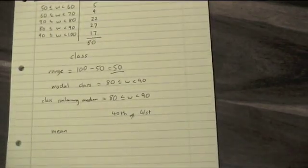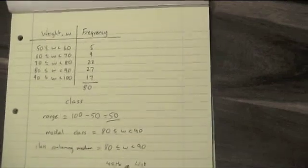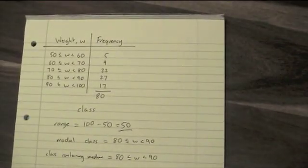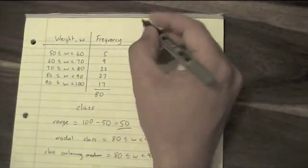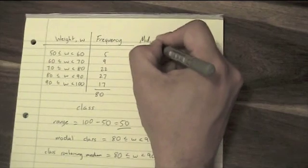The problem with a grouped frequency table is you don't have a number that you can just times by the frequency. So what we have to do is get ourselves a number that we can use. We can add another column called the midpoint.